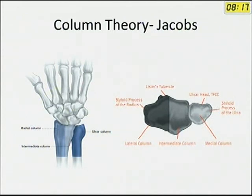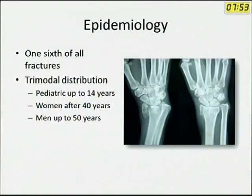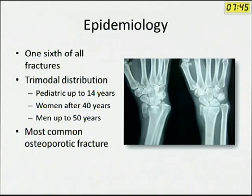These columns are composed of different components and are subjected to different types of mechanical forces. The radial column is formed by the scaphoid fossa and the styloid. The ulnar column is formed by the ulna and the TFCC. The intermediate column is formed by the lunate facet. Coming to epidemiology: one-sixth of all fractures seen in the casualty are distal radius fractures, with a trimodal distribution — pediatric, women after 40 years, and males up to 50 years. This is the most common osteoporotic fracture.